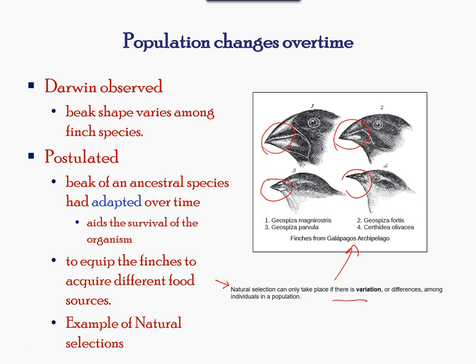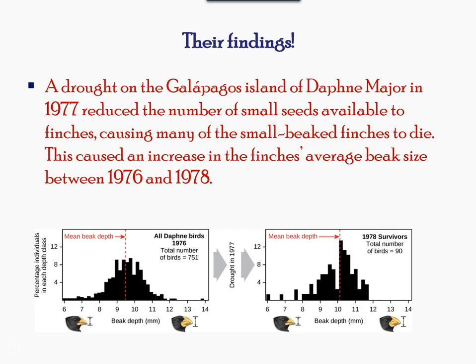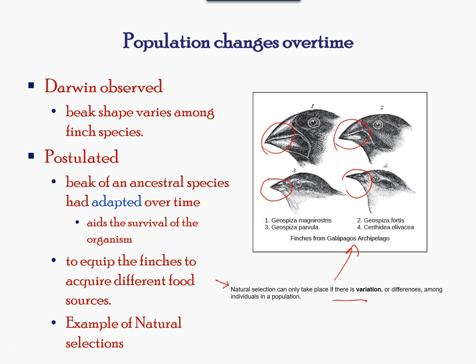Numerous papers were proposed by Darwin and Wallace presenting the idea of natural selection in the famous book titled On the Origin of Species.